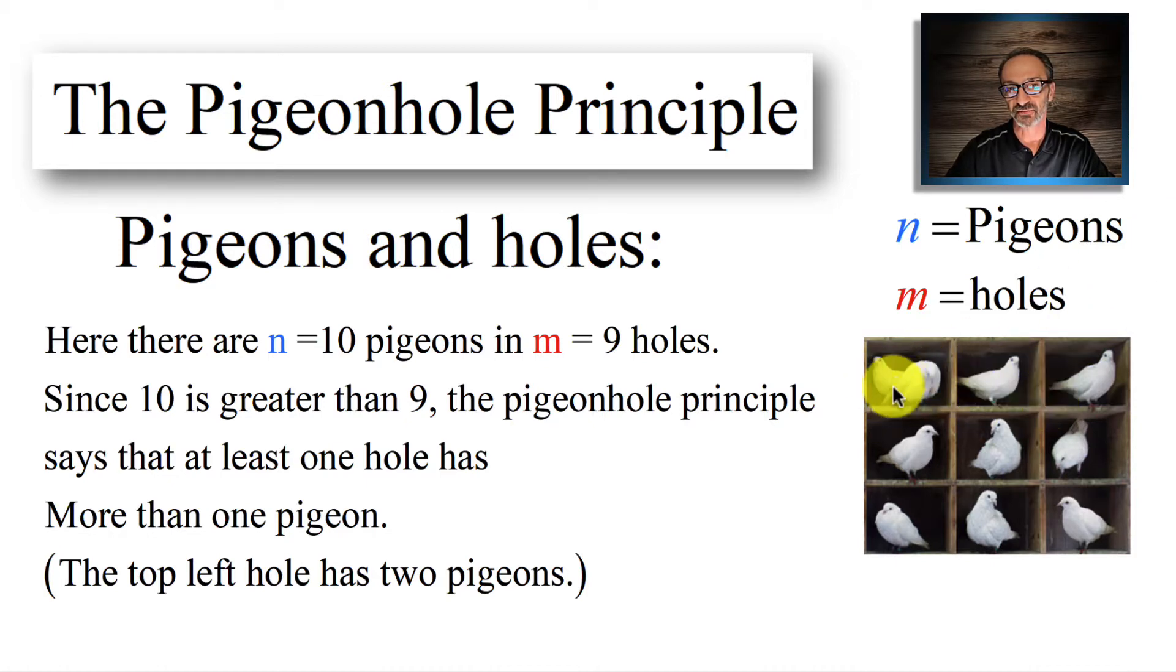As you can see on the top left, I have two pigeons right here. There are N, which is 10 pigeons, in M, which is 9 holes. Since 10 is greater than 9, the pigeonhole principle says that at least one hole has more than one pigeon - guaranteed.